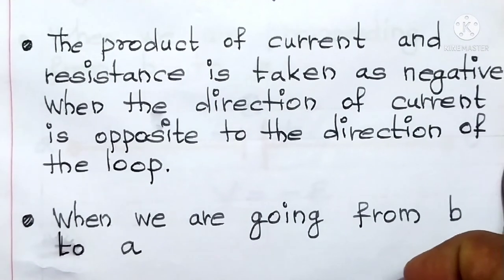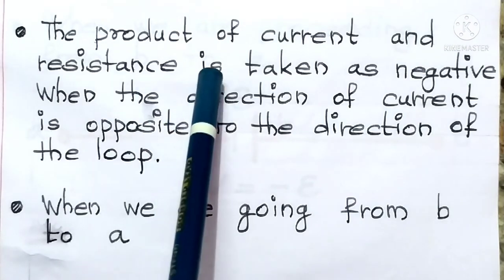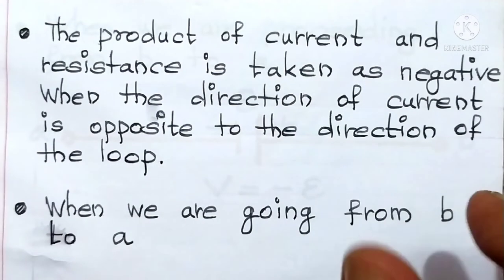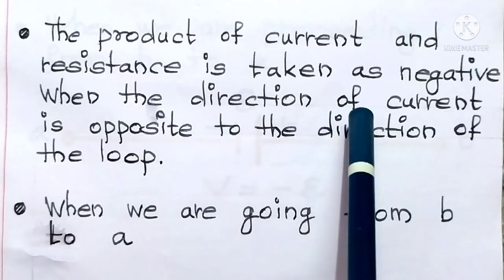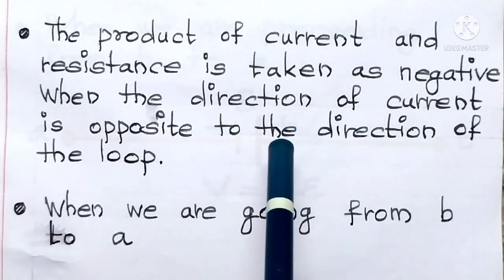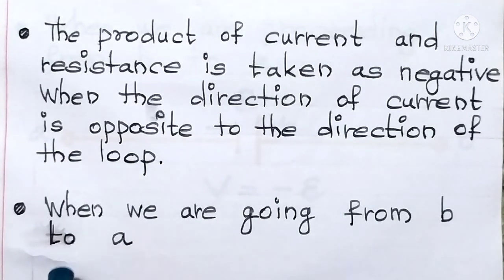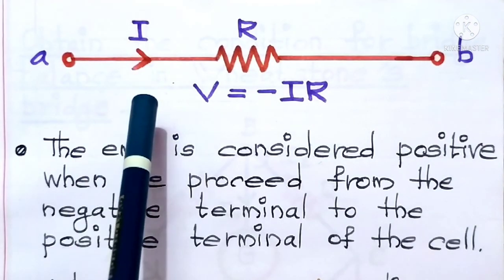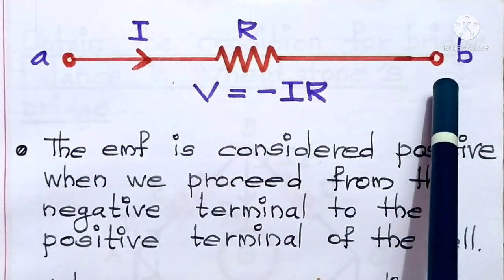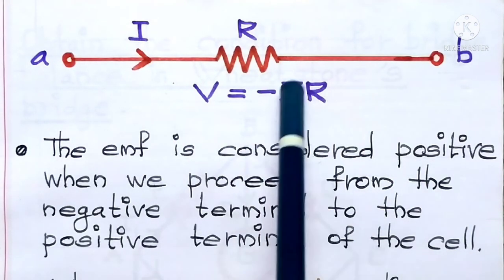The product of current and resistance is taken as negative when the direction of current is opposite to the direction of the loop — that is, opposite to the direction in which we move. For example, when we are going from B to A but the current is in the opposite direction, V is equal to minus IR, so the product IR takes the negative sign.